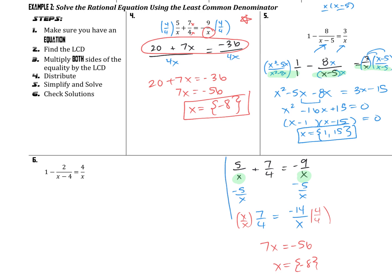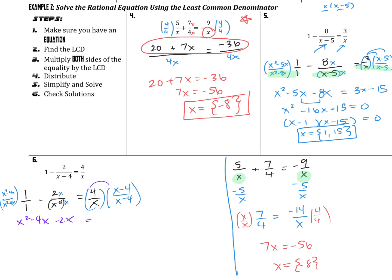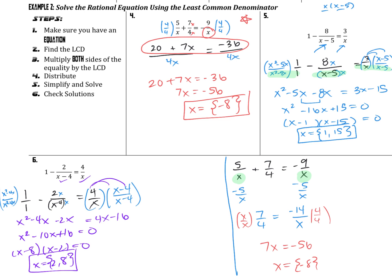Pause the video and try to work through number 6 on your own — at least find the common denominator step first, then unpause and see how you did. After simplifying the numerators, you get x²−4x−2x equals 4x−16. Getting everything on the same side: x²−10x+16 = 0, which factors as (x−8)(x−2) = 0. So x equals 2 and x equals 8. Neither is extraneous, so both go in our set notation answer.